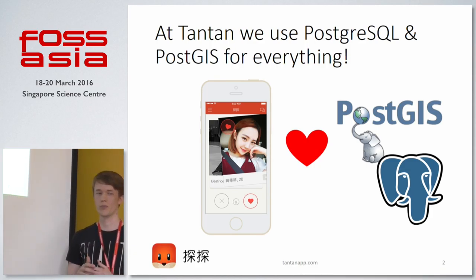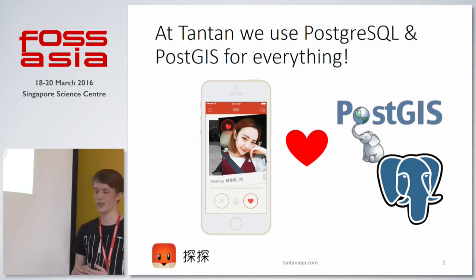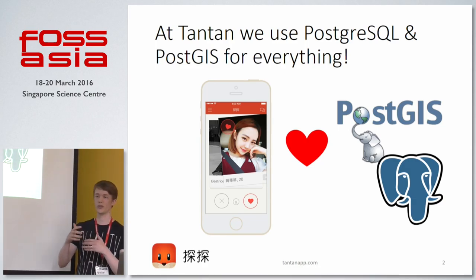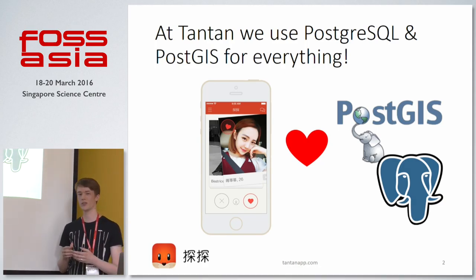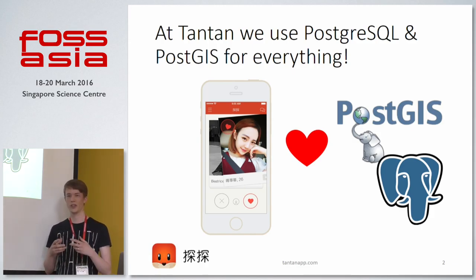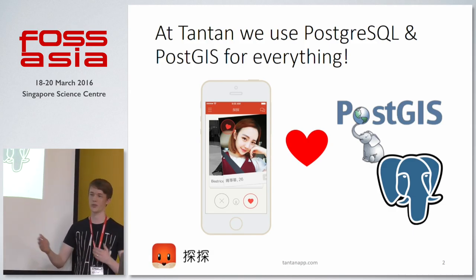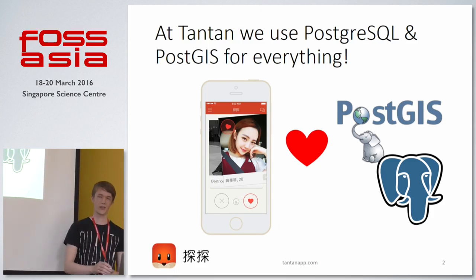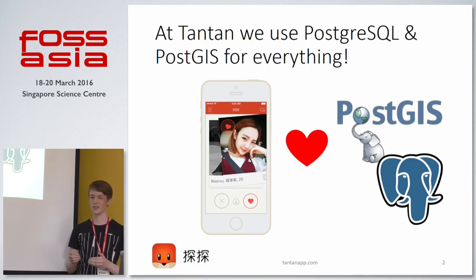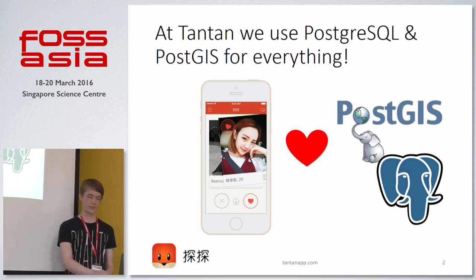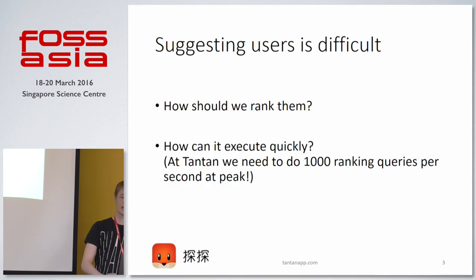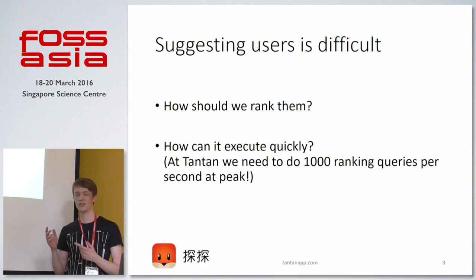One of the core features of Tantan is that we suggest users for you to look at. Because Tantan is a mobile application, we rank the users we show you based on their locations — we want to show users that are nearby, because if I'm close to you, the likelihood that I will like you is higher than if we are very far away. For suggesting these users we have a very big SQL SELECT statement, and suggesting these users is quite difficult actually.